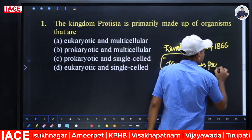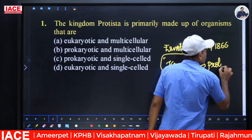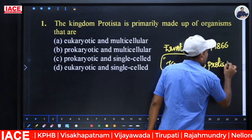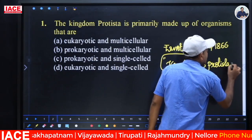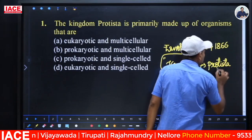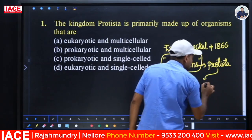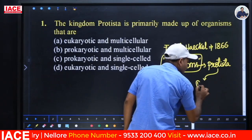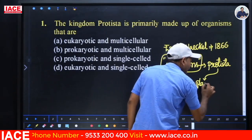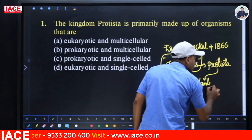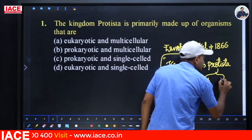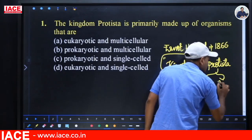Protista mainly includes organisms that possess the characters of plants as well as animals.